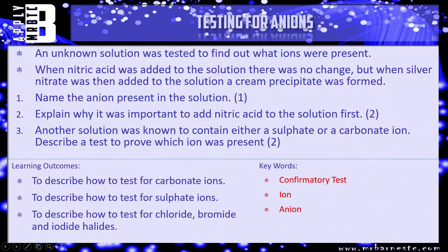Let's have a look at a few questions then and see what the examiner can ask you. An unknown solution was tested to find out what ions were present. When nitric acid was added to the solution there was no change, but when silver nitrate was added a cream precipitate was formed. Number one: name the anion present. Number two: explain why it was important to add nitric acid first — two marks. Number three: another solution was known to contain either a sulfate or a carbonate ion; describe a test to prove which ion was present. Pause the video, have a go, and we'll see how you've done in a minute.